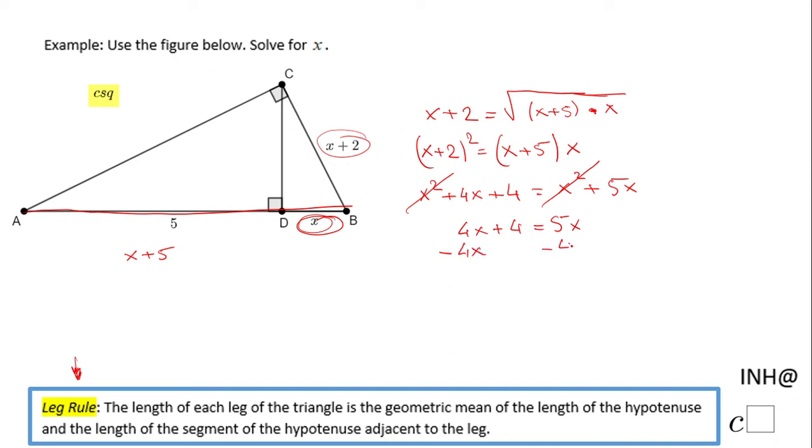And we have four equals five x minus four x, which is just x. So x will be four, and we solve this problem.